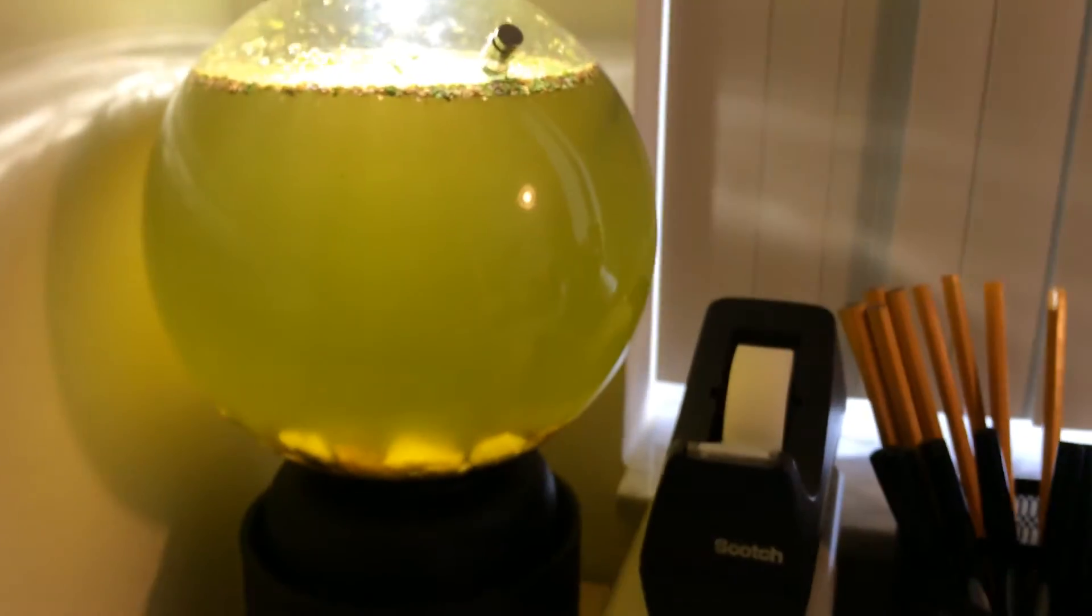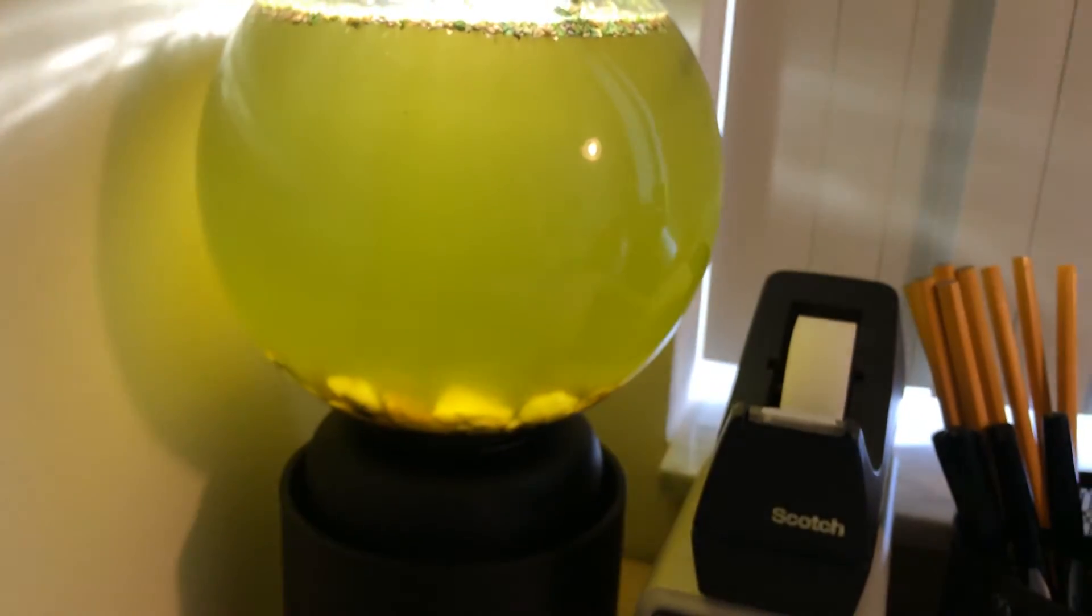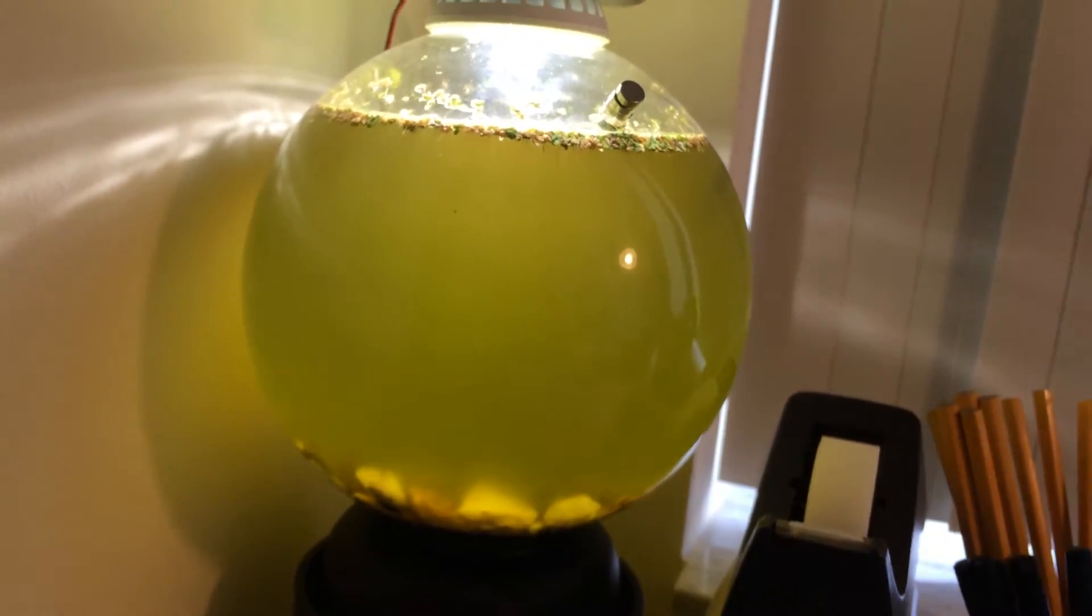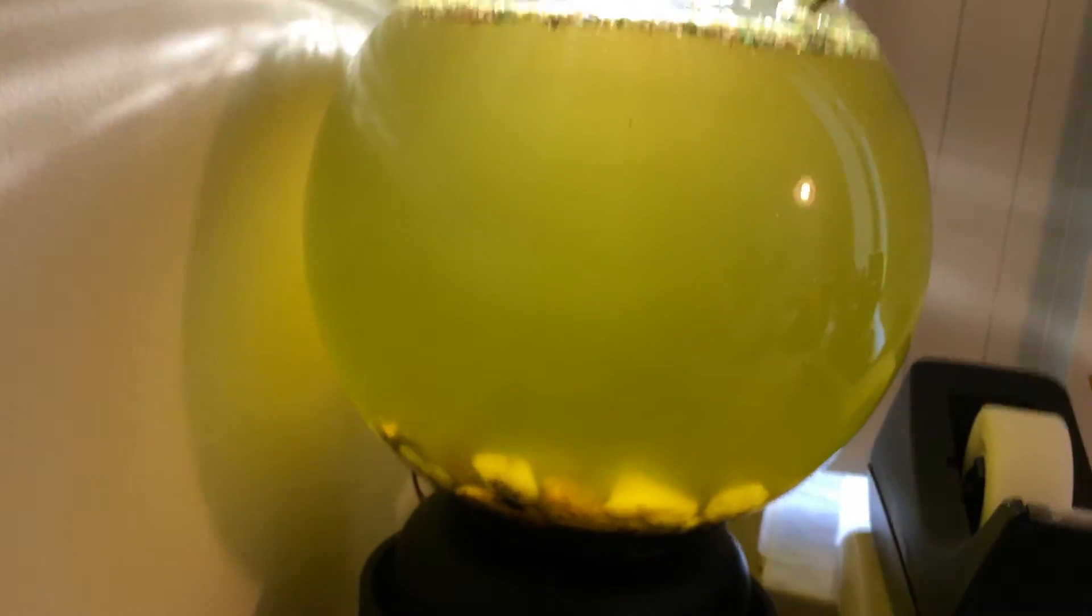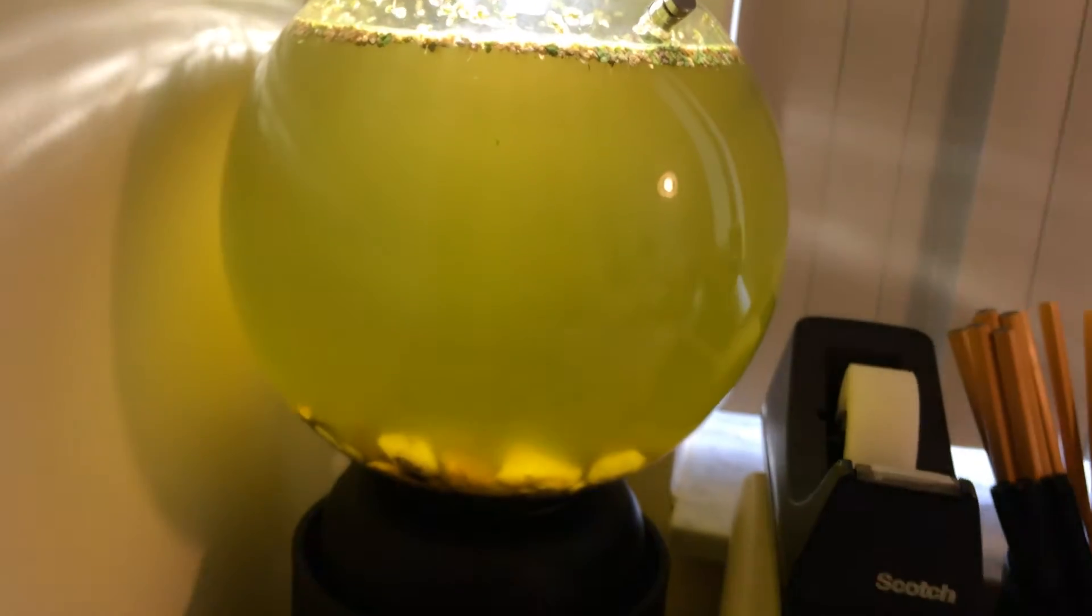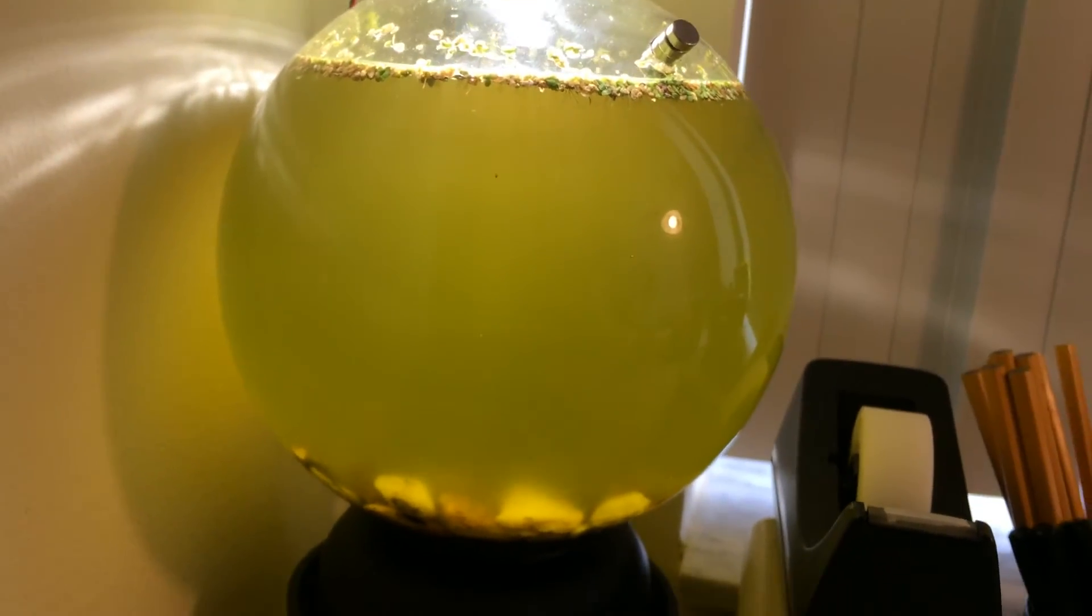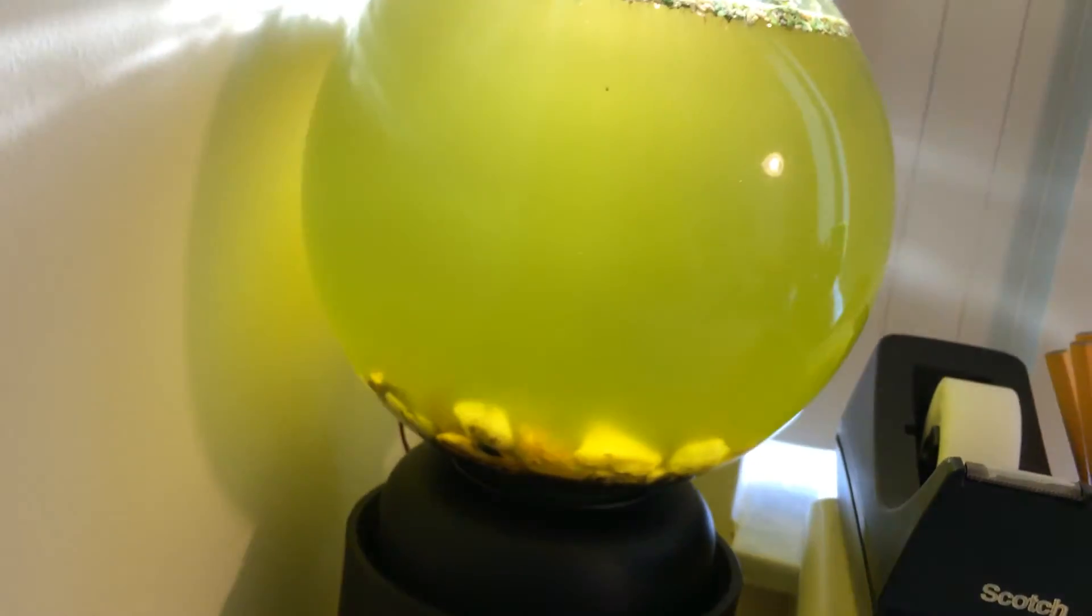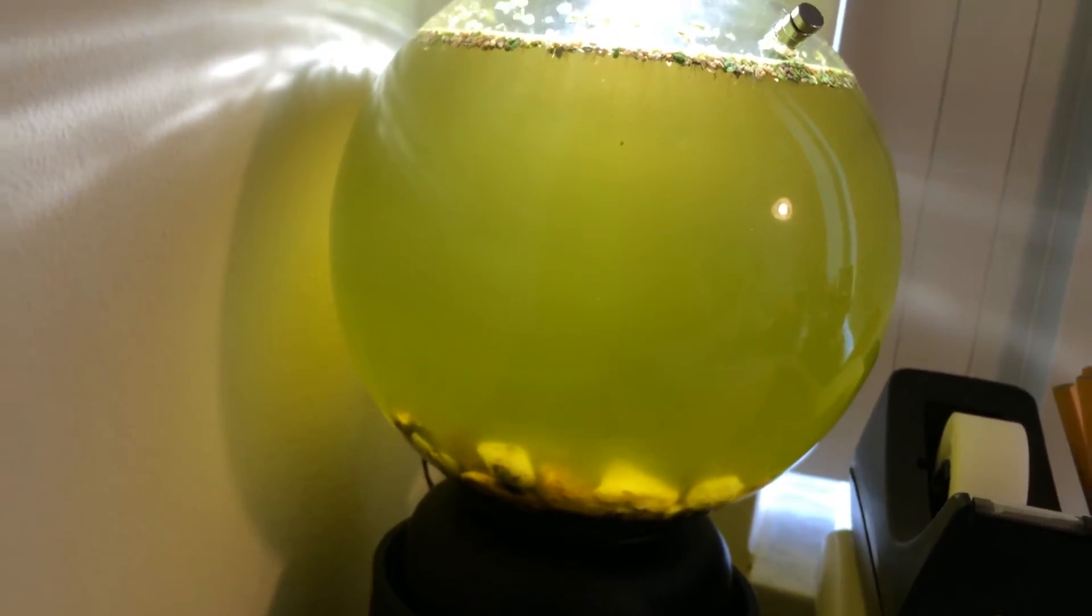And as you can see, an algae bloom occurred. It started fogging up almost immediately, and then it's been pretty much opaque like that, or not opaque, but translucent like that for about a week or two, however long it's been here.